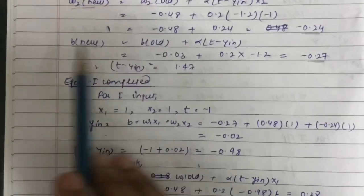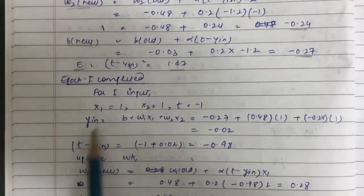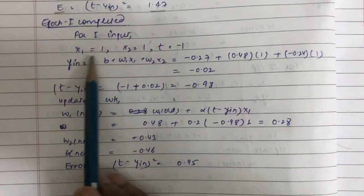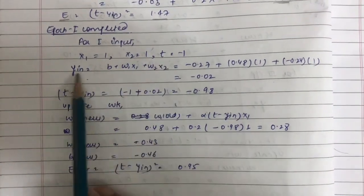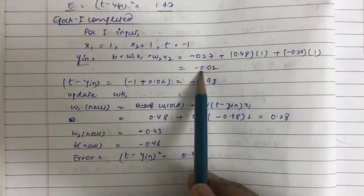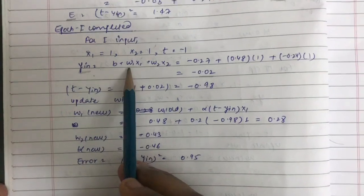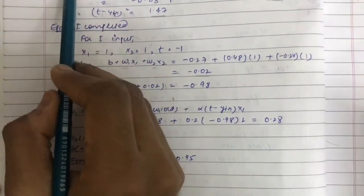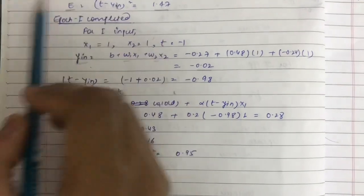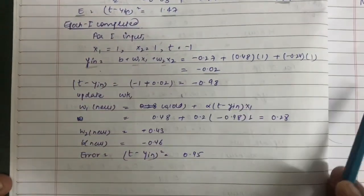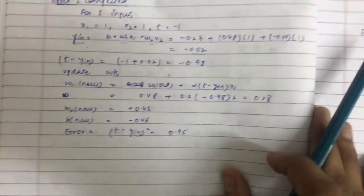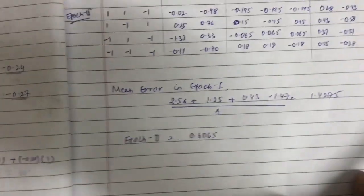With the completion of all four input vectors, Epoch 1 is complete. For Epoch 2, we start again with the first input x1 = 1, x2 = 1, t = −1. The w1 and w2 values used here are the same as those from the fourth input of Epoch 1. After covering all input vectors, Epoch 2 is also completed and we get the final values.